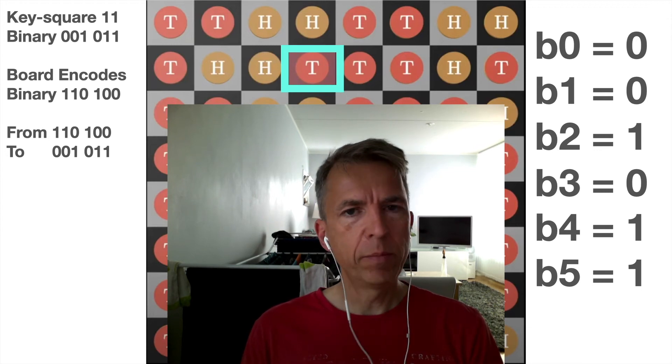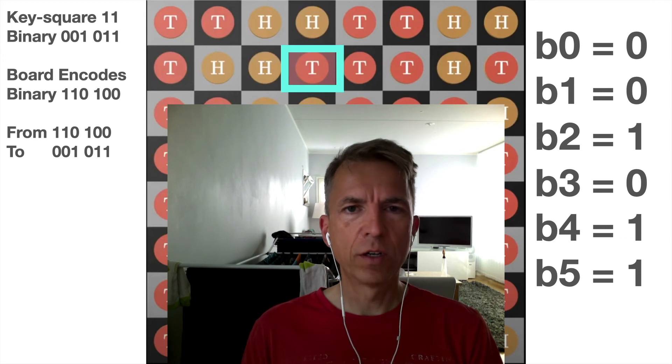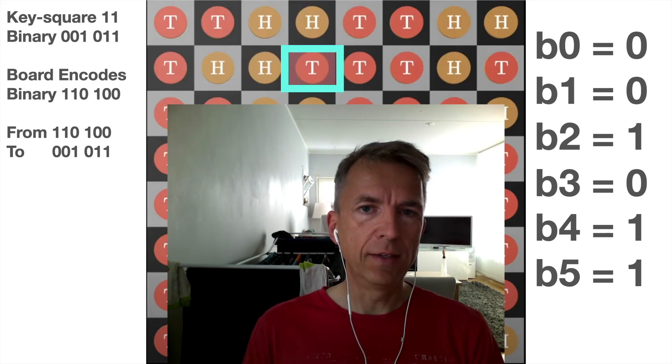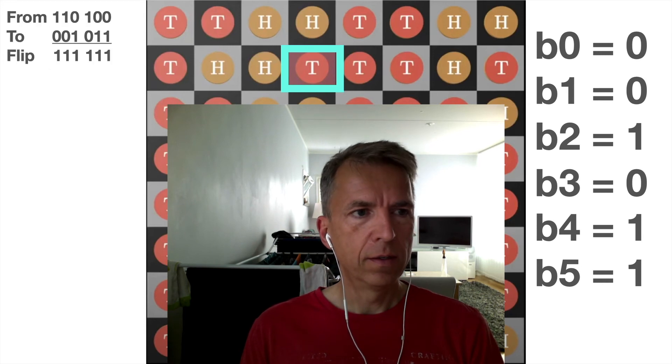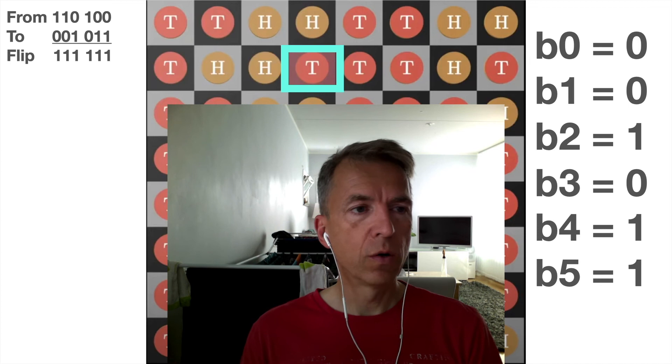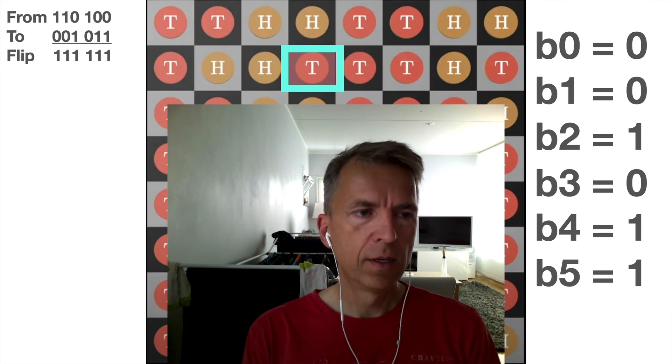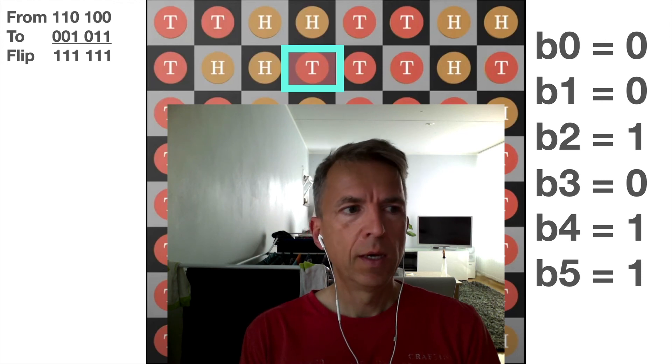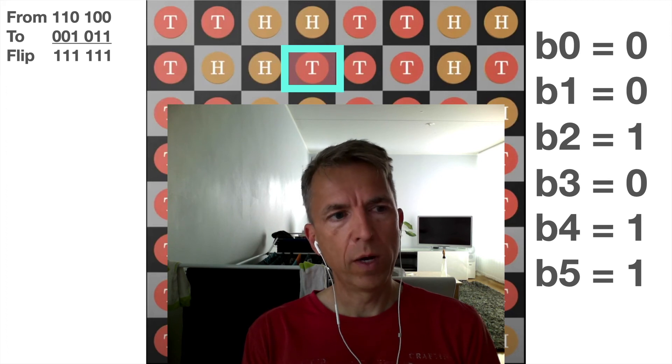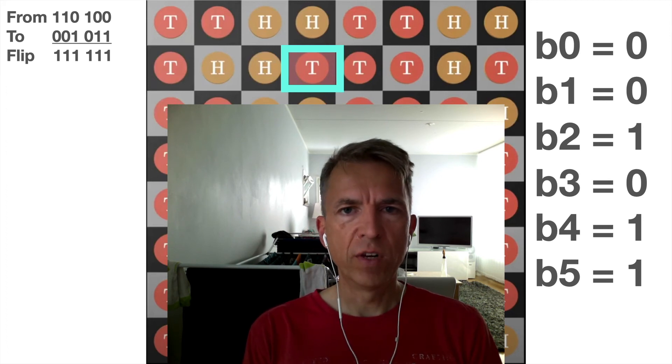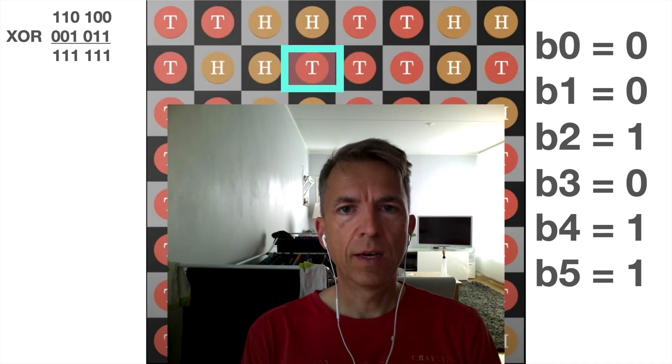But using our definition we know this board actually encodes one one zero one zero zero. So we need to change the board so that instead of encoding whatever encodes now it encodes where the key is. So we need to find the flipping pattern that turns the actual encoding into the encoding of where the key is.